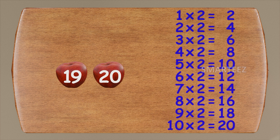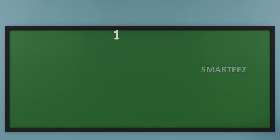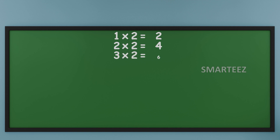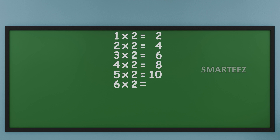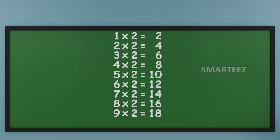Let's do the tables now. Take a look: one times two is two; two times two is four; three times two is six; four times two is eight; five times two is ten; six times two is twelve; seven times two is fourteen; eight times two is sixteen; nine times two is eighteen; and ten times two is twenty.